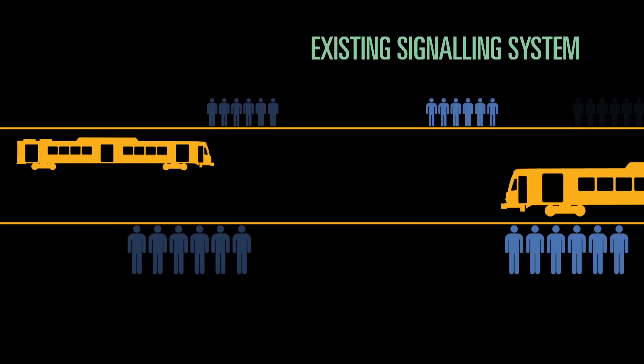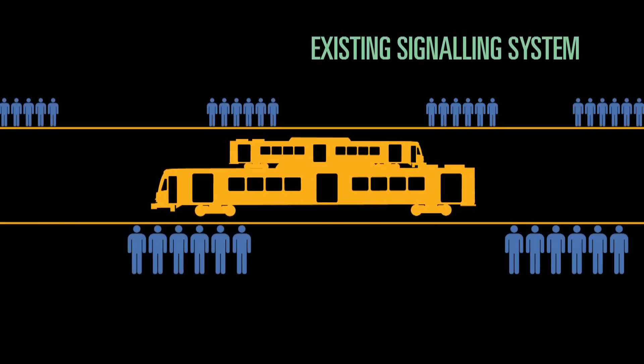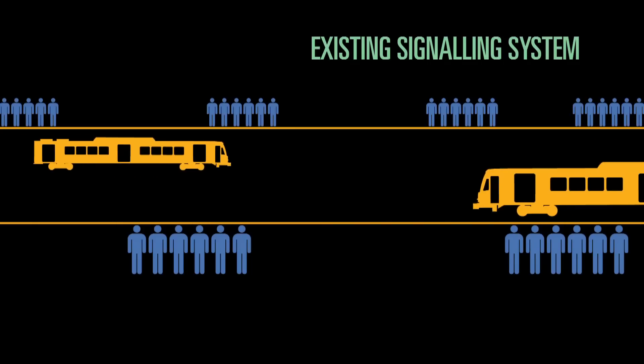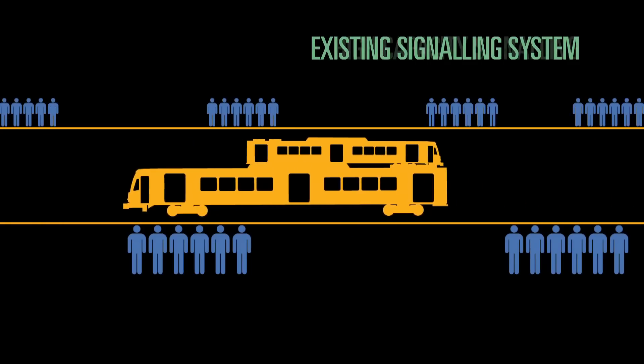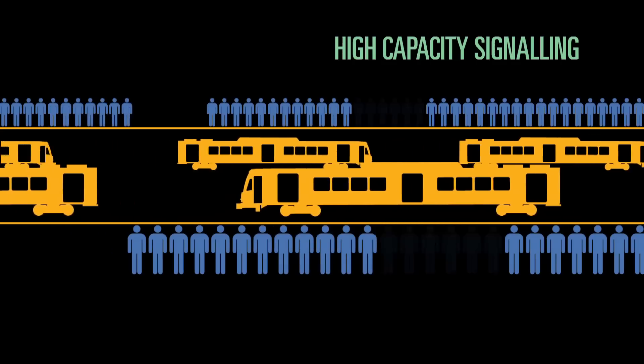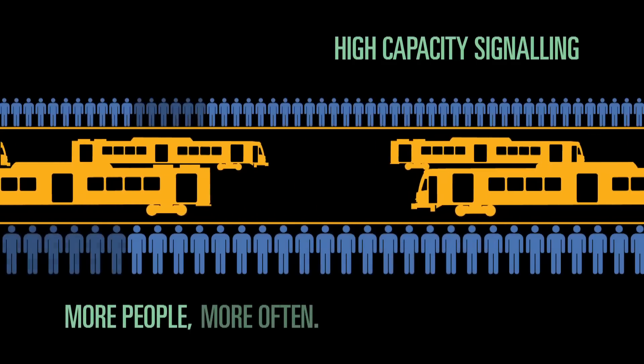The existing signalling system limits the distance between trains, which also limits the number of services that can run. High capacity signalling allows trains to safely run closer together, which enables the Dandenong Rail Corridor to carry more people more often.